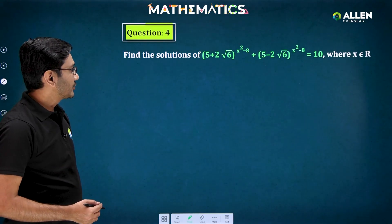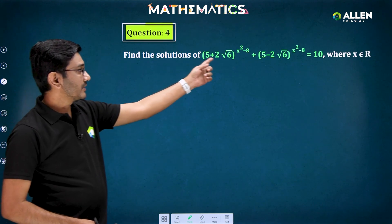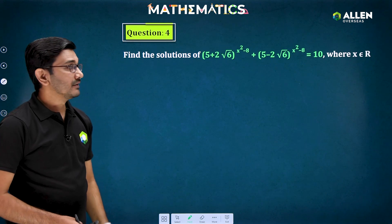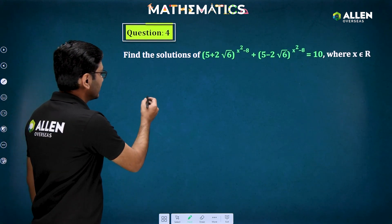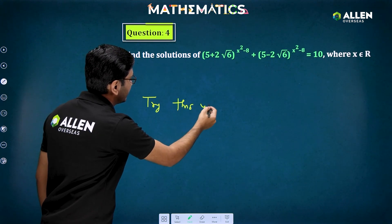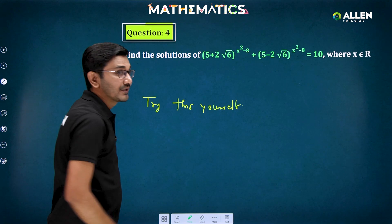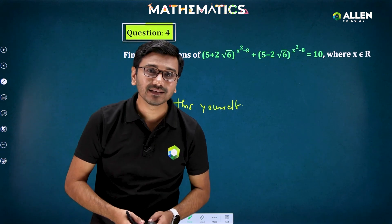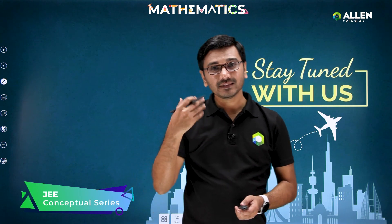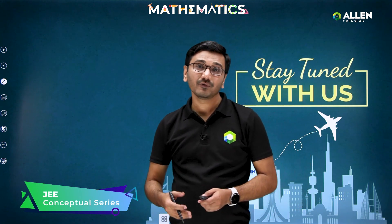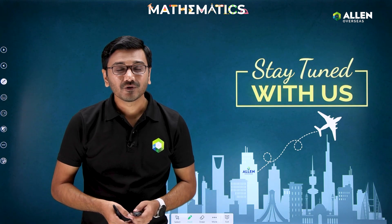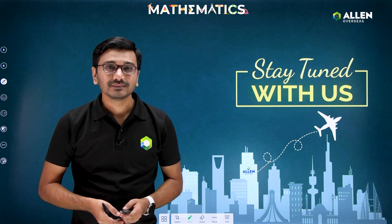Homework question: (5 + 2√6)^(x² - 8) + (5 - 2√6)^(x² - 8) = 10. Find the solutions and post your answers in the comment box. That's all for reducible-to-quadratic today. We'll come up with a new video covering more types of questions reducible to quadratic. Stay tuned with Alan Overseas for more videos on JEE. Thank you.